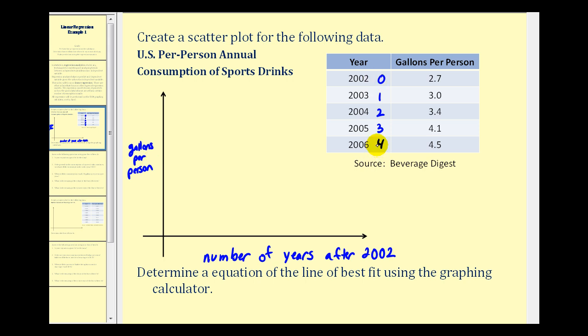The largest value of x is four, so let this equal four, and we'll scale it by ones. The largest value of y is four point five, so we'll scale the y axis from zero to five.